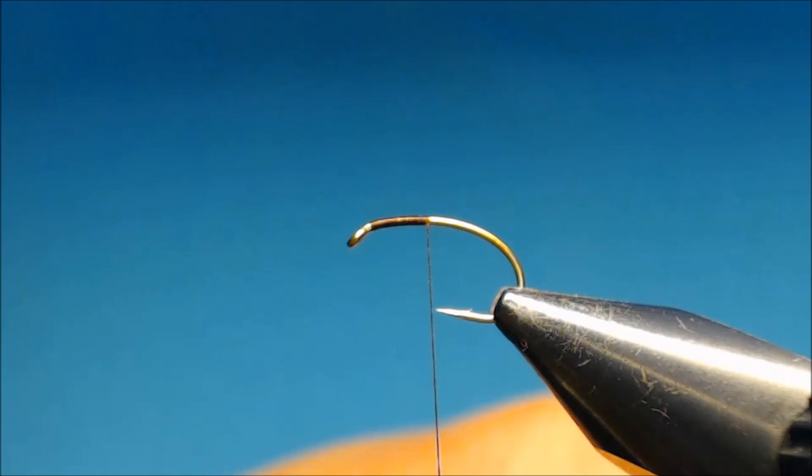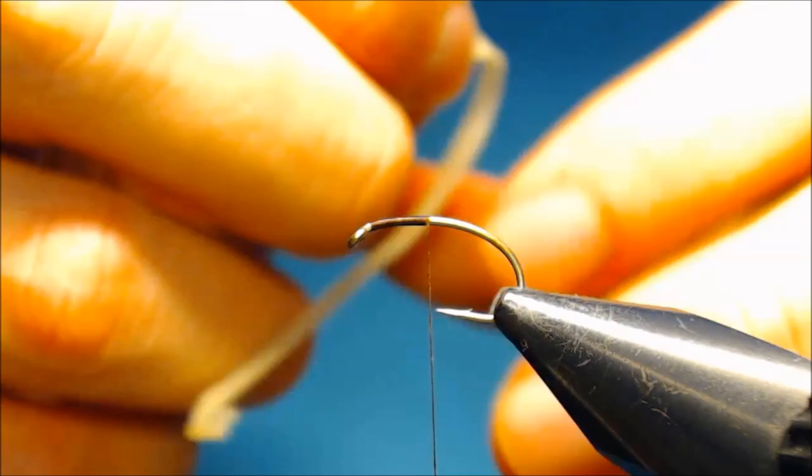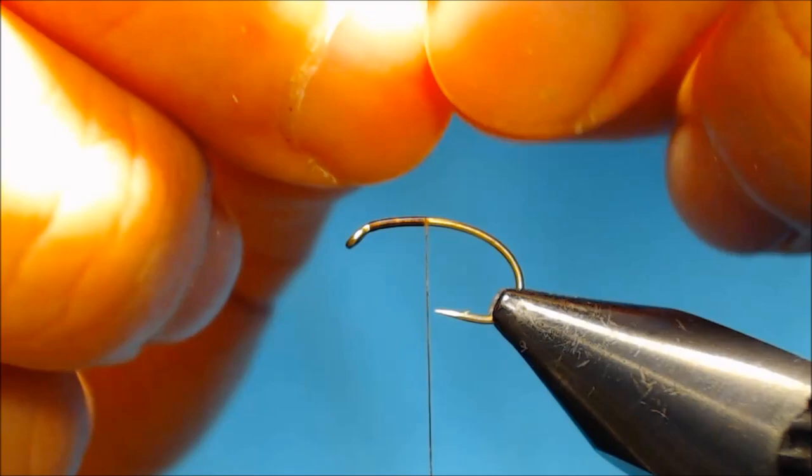And now we'll tie in the first material and this is some latex. This comes from a latex sheet. I've then cut in a 3mm strip.